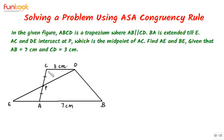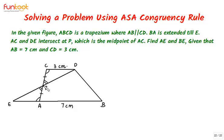It is also given that CD is parallel to AB. Taking AC as the transversal, angle DCP equals angle EAP as these are alternate angles. Also, angles CPD and EPA are vertically opposite angles, so these are equal too.